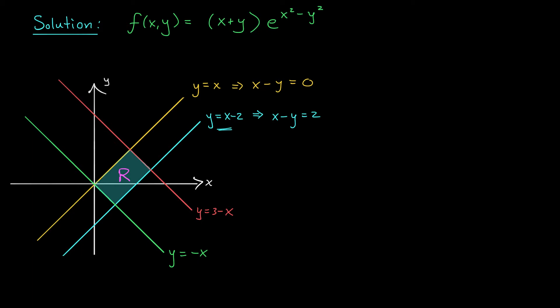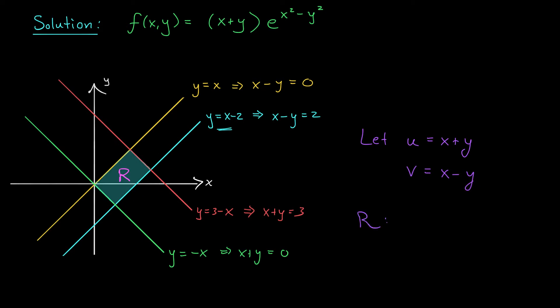We'll do the same thing with the other two lines. Working with this red line, if I move the x over, I get x plus y is equal to 3. Working with the green line, if I move the x over, I get x plus y is equal to 0. Again, I have an expression involving x and y that's between two constant values — that can be my other variable. So let's say u is x plus y, and v is x minus y. R has a rectangular description in terms of u and v: u is between 0 and 3, and v is between 0 and 2.